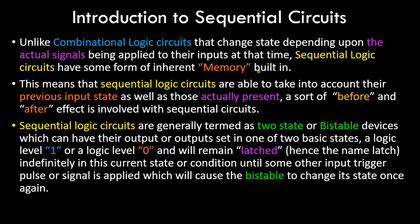We've seen combinational logic circuits up until now in this playlist — like half adder, full adder, multiplexer, demultiplexer and more. All of them had some input signals and their corresponding output signals, but they did not have a feedback mechanism or a memory mechanism wherein the output depended on the previous input as well. In a sequential logic circuit, these circuits are able to take into account their previous input state as well as the actual present state — a sort of before-and-after effect. That's why the name sequential logic circuits.